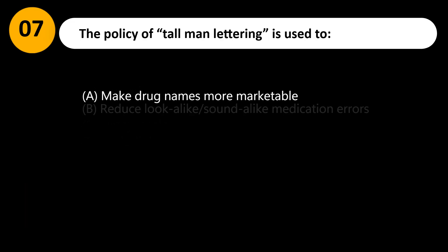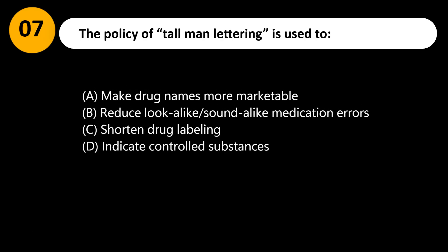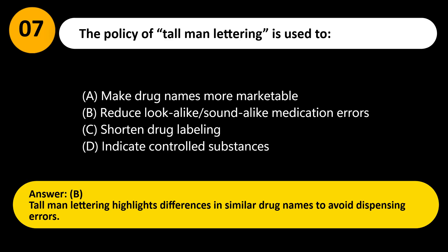The policy of tall man lettering is used to: A. Make drug names more marketable. B. Reduce look-alike/sound-alike medication errors. C. Shorten drug labeling. D. Indicate controlled substances. Answer: B. Tall man lettering highlights differences in similar drug names to avoid dispensing errors.